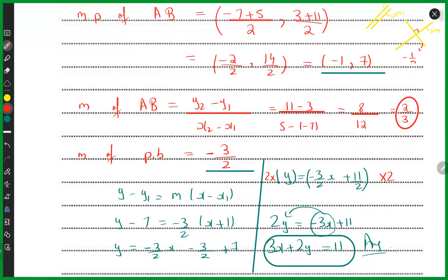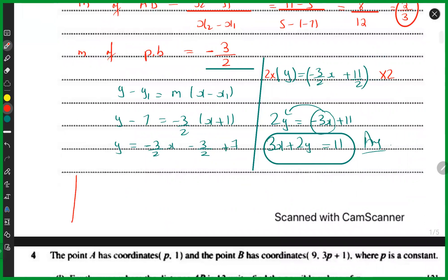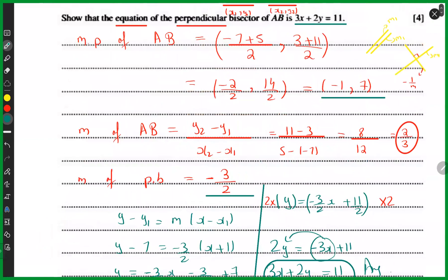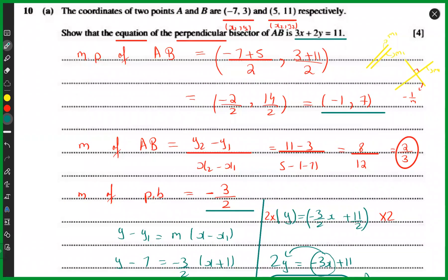For example, if the gradient of one line is 1/2 and both lines are perpendicular to each other, the gradient of the other line is -2. So every time you find the equation of a perpendicular bisector, you find the gradient of the original line, flip the numerator and denominator (reciprocal), and add a negative sign. That's all there is to it.